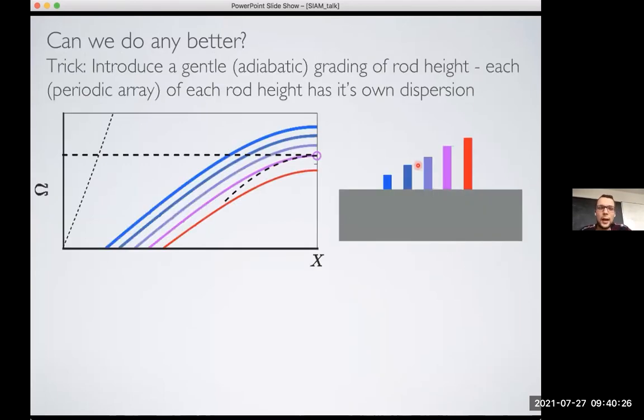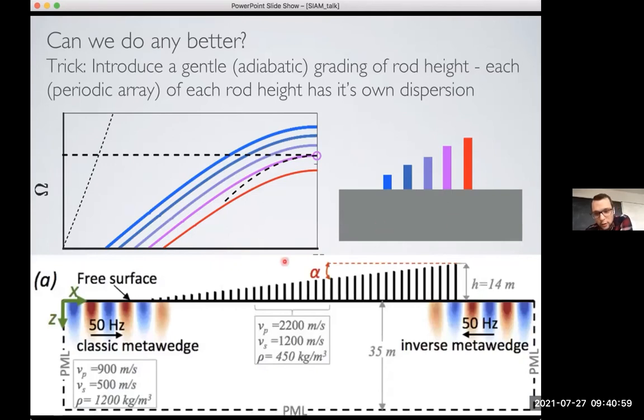And we have this trick, which is to introduce a gentle or adiabatic grading of each rod. So instead of having rods of all the same height, we introduce some slope. And what this does is that if you do it gently enough, you trick the wave to think that it now has a spatially dependent dispersion relation. So each of these dispersion relations correspond to the rod of that given height. So now when a wave travels through the material, it now experiences dispersion properties depending on the rod where it's at, because we've changed it so gradually. So this structure is then unsurprisingly called the meta wedge, because it looks like a doorstop, basically this wedge material. And it has two different effects, whether you fire waves in from the left or from the right.